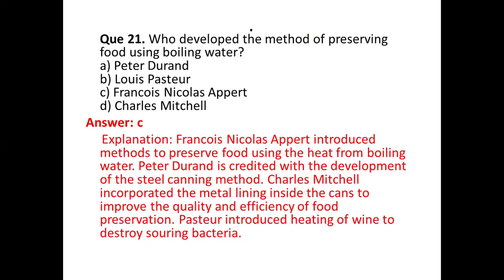Question number twenty-one: who developed the method of preserving food using boiling water? Options are: (a) Peter Durand, (b) Louis Pasteur, (c) Nicholas Appert, (d) Charles Michelle. The correct answer is option (c) Nicholas Appert, who introduced methods to preserve food using heat from boiling water. Peter Durand is credited with the development of the steel canning method. Charles Michelle incorporated metal lining inside cans to improve quality and efficiency. Pasteur introduced heating of wine to destroy souring bacteria.